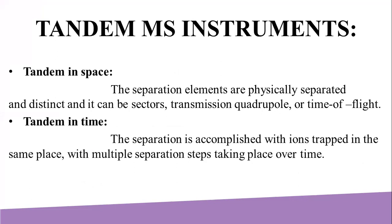There are two types of tandem mass spectrometry: tandem in space and tandem in time. In tandem in space, the separation elements are physically separated and distinct, with a physical connection between elements to maintain high vacuum. These elements can be sectors, transmission quadrupoles, or time-of-flight analyzers.